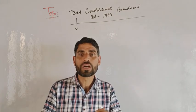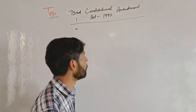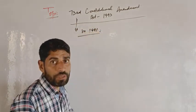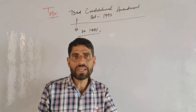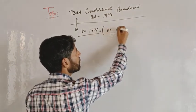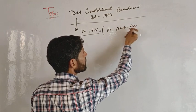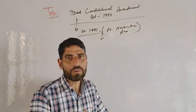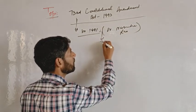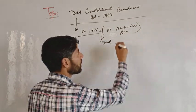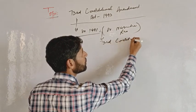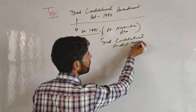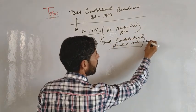The 73rd Constitutional Amendment Act gave Panchayati Raj institutions constitutional status. In 1991, Prime Minister of India P.V. Narasimha Rao introduced the 73rd Constitutional Amendment Bill in the Lok Sabha. This bill was passed in the Lok Sabha in 1991 and in the Rajya Sabha in December 1992.